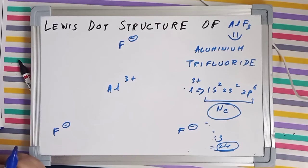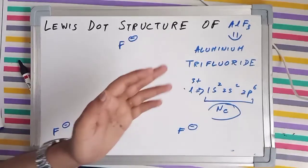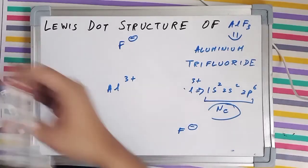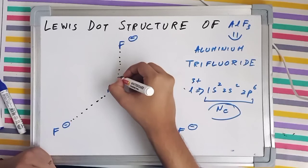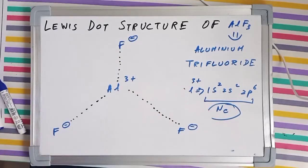No I am not going to draw lines. Why? Because it is an ionic compound. And in ionic compounds there is no sharing of electrons. Instead there is just a simple electrostatic force of attraction between charges. So I am going to draw it by dotted lines, so that you remember that AlF3 is an ionic compound and not a covalent compound.